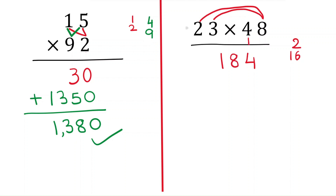Now I'm doing with the tens place, so I have to write the answer from the tens place. First put zero in the unit place and write the answer. Four times three is twelve; carryover is one. Four times two is eight.